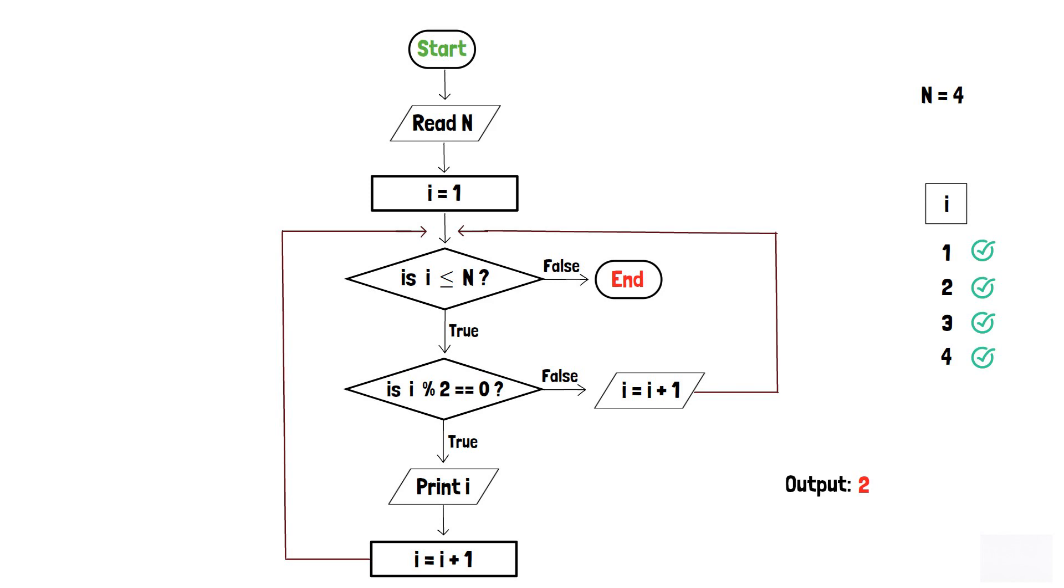Here, as 4 modulo 2 is equal to 0, the condition in the second decision box is true and 4 is printed. In addition, i is changed to 5.